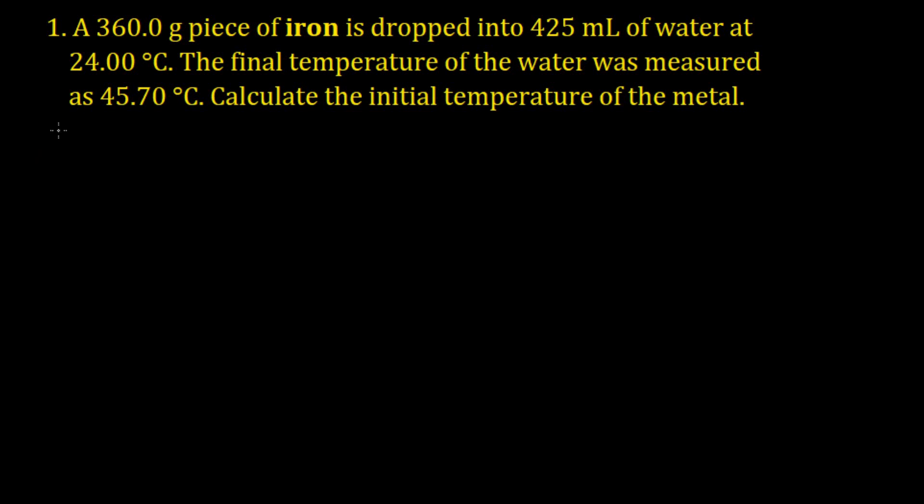Now in these problems, when you are putting two different heat changes together, you use q equals ms delta t. Except instead of doing q equals ms delta t just once, you do ms delta t plus ms delta t equals 0. And in this case you would do this one because there are two different things: the iron and the water.